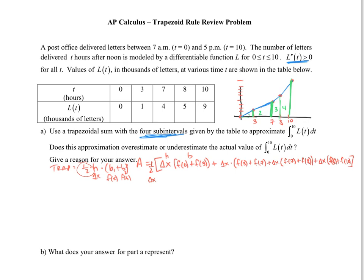Plus delta x times f of 3 plus f of 7, plus delta x times f of 7 plus f of 8, plus delta x times f of 8 plus f of 10. Put the 1 half out in front because of the 1 half in our formula. Now, some of you are saying, well, why can't you just take the delta x out?